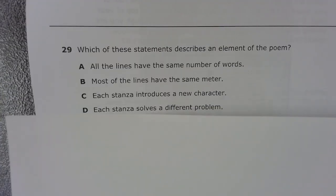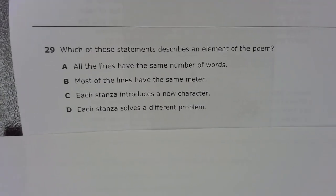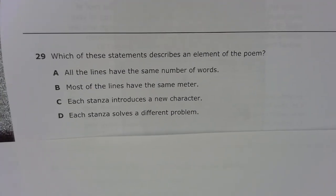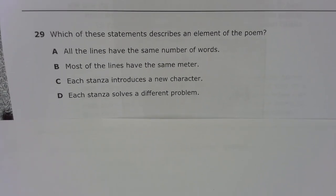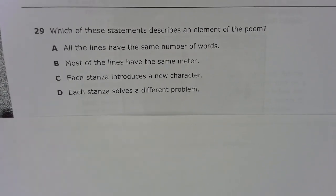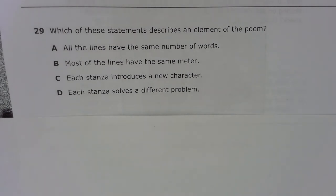Number 29. Which of these statements describes an element of the poem? A. All of the lines have the same number of words. B. Most of the lines have the same meter. C. Each stanza introduces a new character. D. Each stanza solves a different problem.